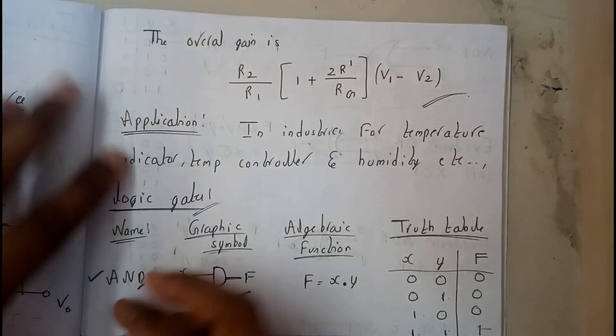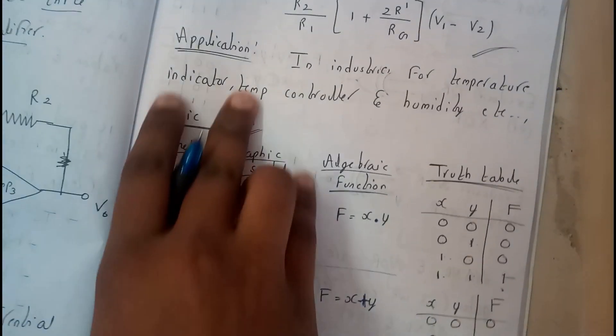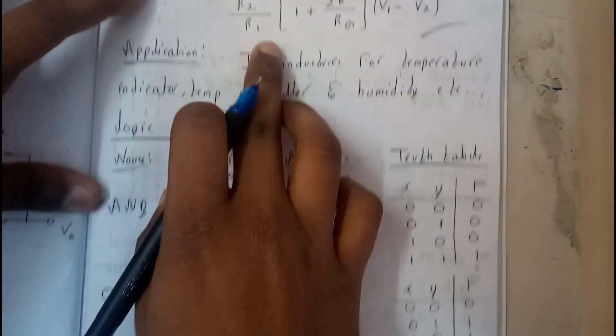I hope everyone is now clear with the topic. If you want to write the equation for the overall gain, you can just substitute all these three values and you can get this equation.